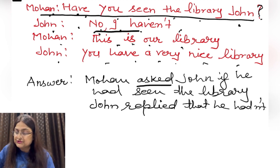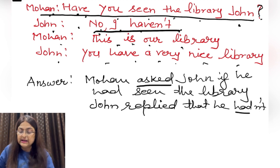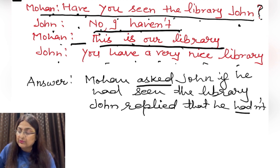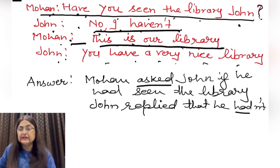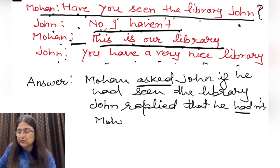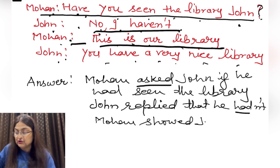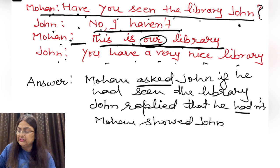Now for the third sentence: 'This is our library.' Mohan is showing the library to John. Here you have to use the word 'should' — Mohan told John that this should be their library. 'Our' is changed to 'their library.'